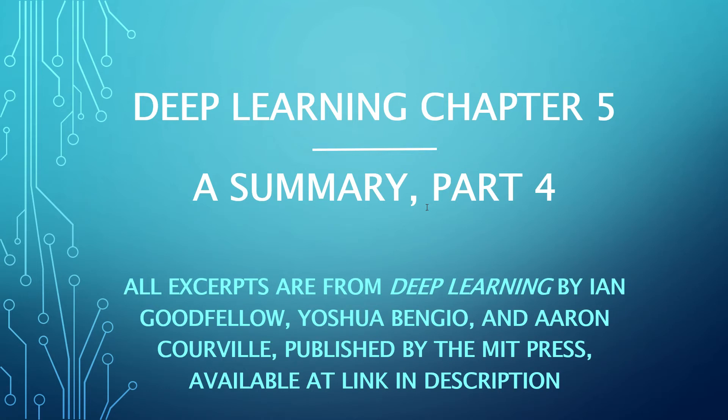This is part 4 of the chapter 5 summary for the Deep Learning book, authored by Ian Goodfellow and others as presented on screen here. The focus of this section is on estimators, bias, and variance.